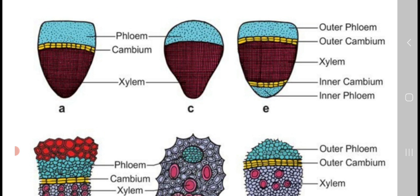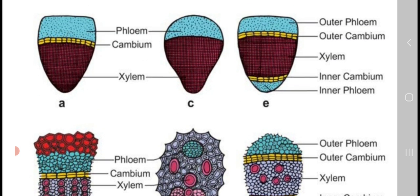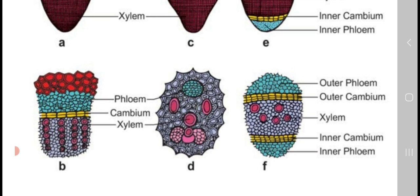In diagram C, the closed vascular bundle is shown. In diagram D, the detailed tissue diagram shows bundle sheath present, phloem at the top, and xylem divided into protoxylem and metaxylem. Metaxylem elements are arranged in a Y-shape; smaller protoxylem elements are destroyed and form a cavity called protoxylem lacunae. The shape of the monocot stem's closed collateral vascular bundle looks like a skull — called skull-shaped vascular bundle.